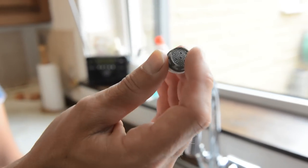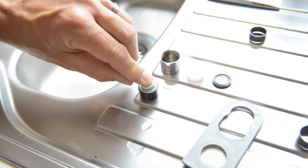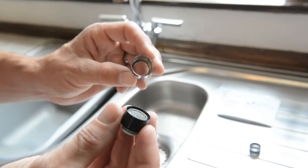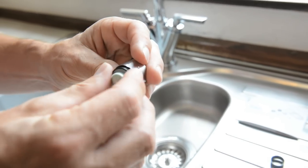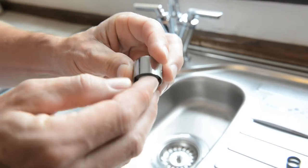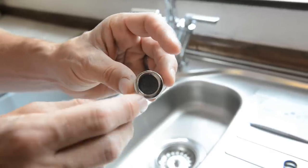Next insert the aerator into the adapter and put them in the tap nozzle, making sure the grey mesh is facing down. You can see I've used the right one because it fits nice and snug.